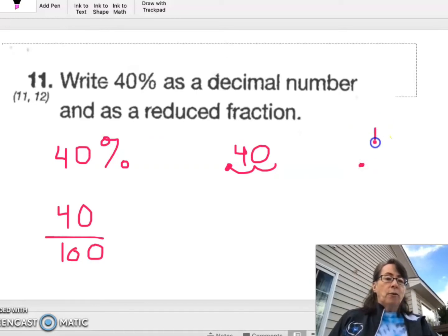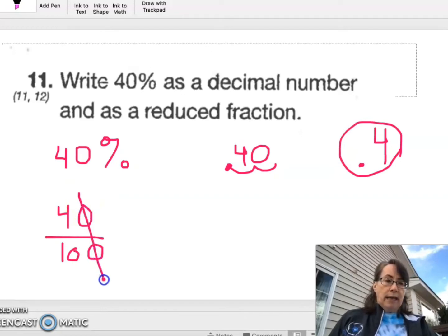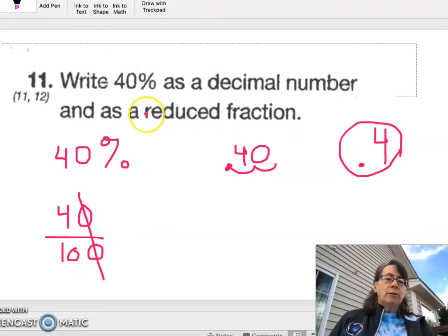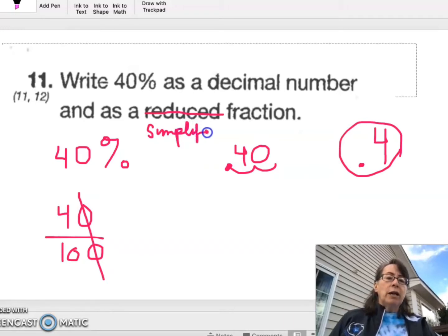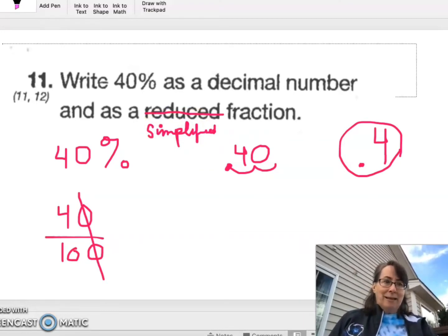So 0.4 would be a decimal number and 40 over 100 is a fraction, but not reduced. Reduced is a term that's not used much anymore. Most books will now use simplified. We divide by 2 on the top and get 2. Divide by 2 on the bottom and we get 5. So the answer is 0.4 for the decimal and 2 fifths for the fraction.